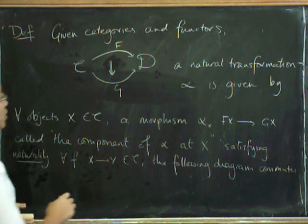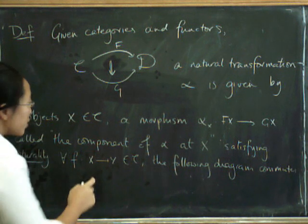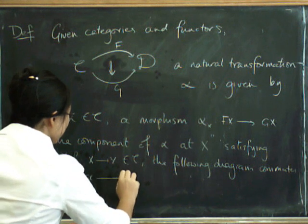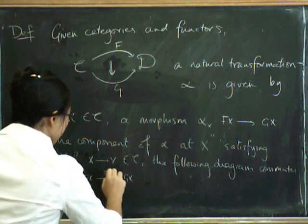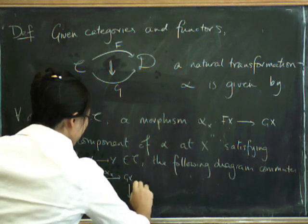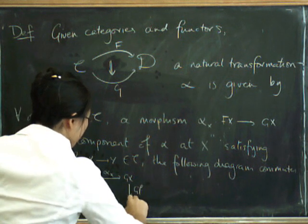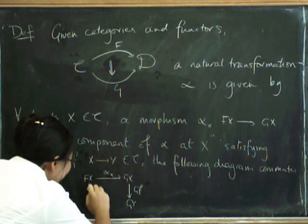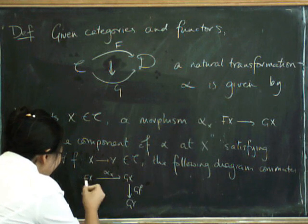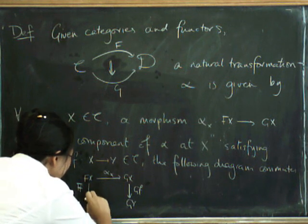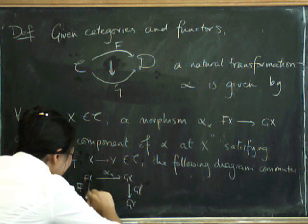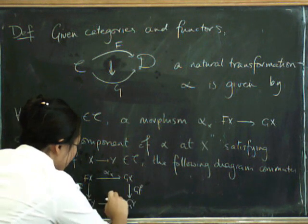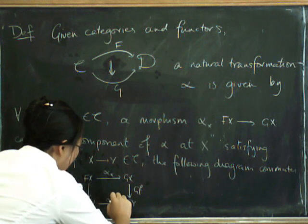Hopefully you can still see it at the bottom of the board here. So what can we do? There are two possible things we can do. We can either start from F of X, use our natural transformation to get to G of X, and then do G of our morphism to get ourselves to G of Y. Or alternatively, we can do F of f down here. Whoops, that takes us to F of Y. And then we can do our component of the natural transformation afterwards, alpha of Y.